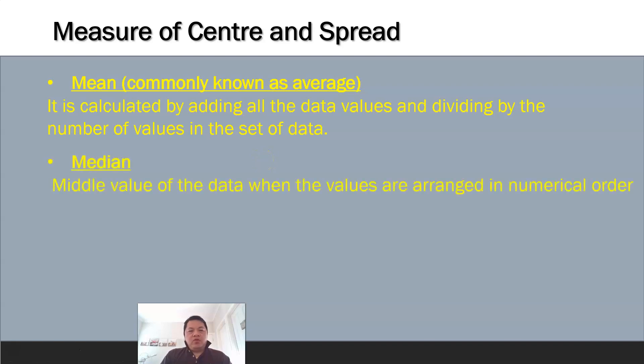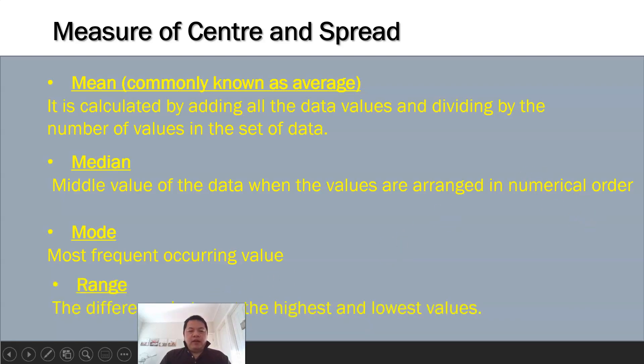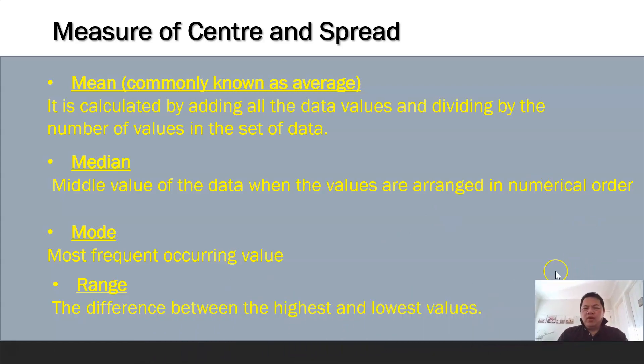Median is basically looking for the middle number of the data, but it's very important to arrange the data in numerical order from smallest to largest. Mode is to find the most common occurrence, like yesterday when we did data collection on the most common group with the highest number of mobile phones, between age 11 to 20. The range is the difference between the highest and the lowest value. The range is always positive.